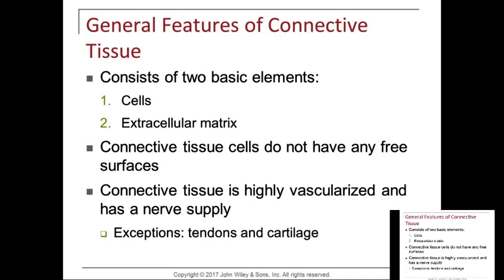Connective tissue cells do not have any free surfaces. Connective tissue is highly vascularized, meaning good blood supply and nerve supply, with the exception of tendons — tendons don't have the best vasculature. Cartilage is avascular, and ligaments are avascular.